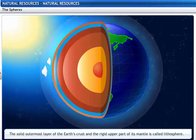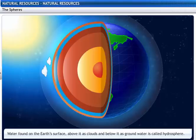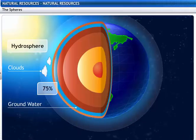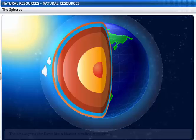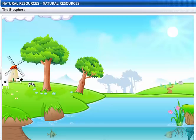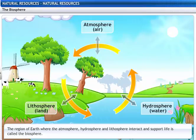The solid outermost layer of the Earth's crust and the rigid upper part of its mantle is called the lithosphere. The water found on the Earth's surface, above it as clouds, and below it as groundwater is called the hydrosphere. It constitutes 75% of the Earth's surface. The air that covers Earth like a blanket is called the atmosphere. The region of Earth where the atmosphere, hydrosphere and lithosphere interact and support life is called the biosphere.